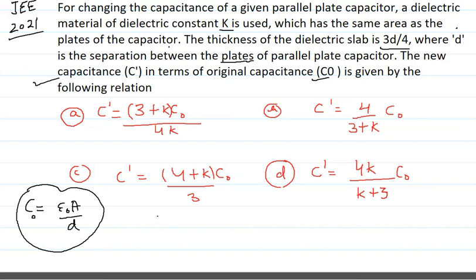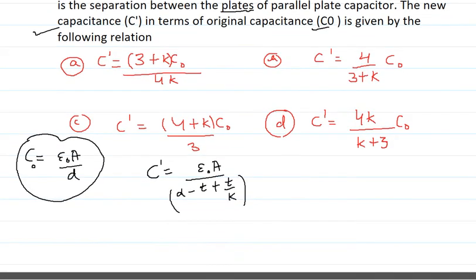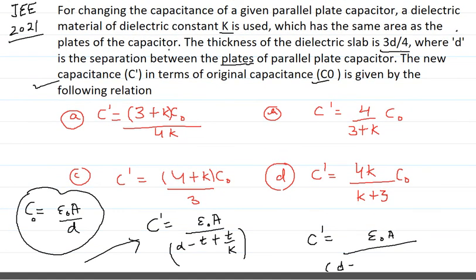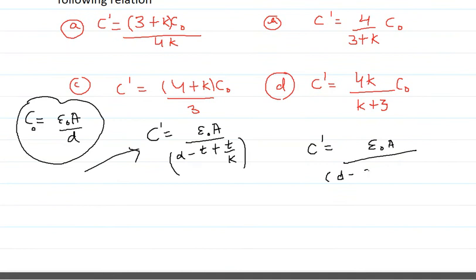When a dielectric is inserted into a capacitor, the new capacitance C' is equal to epsilon naught A divided by (d minus t plus t upon K), where t is the thickness of the dielectric inserted and K is the dielectric constant. The thickness of the dielectric being inserted here is 3d/4, so we replace t with 3d/4, giving: C' = epsilon naught A divided by (d minus 3d/4 plus 3d/4K).